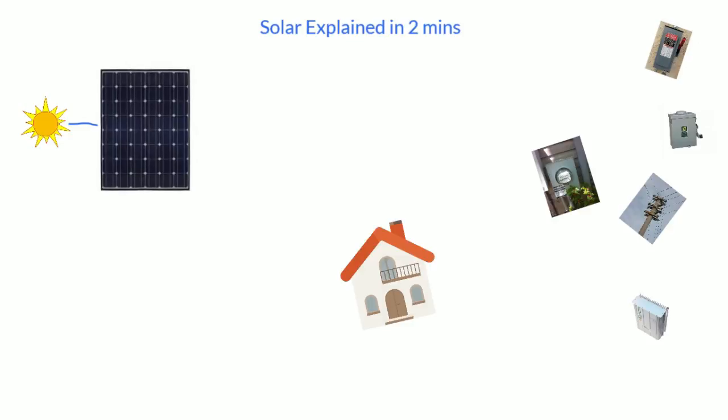The photons excite the electrons on the solar module. When those excited electrons move, that produces current. That current, the moving of electrons, is what produces electricity.